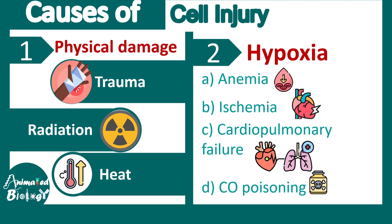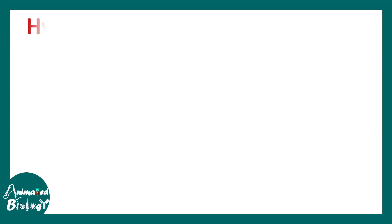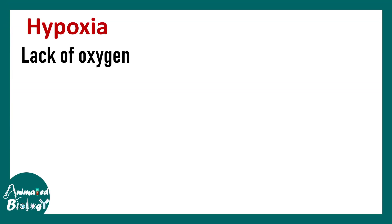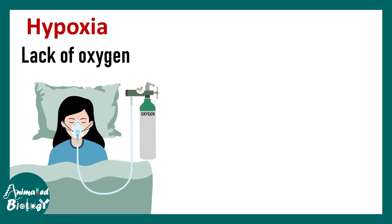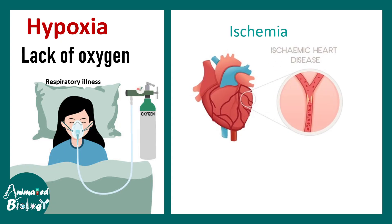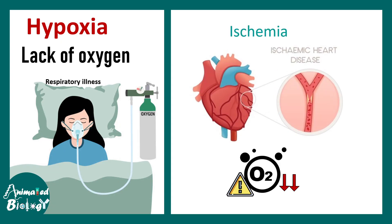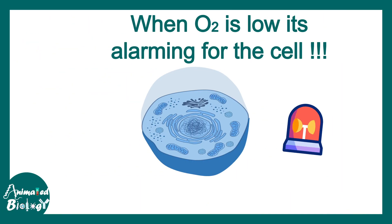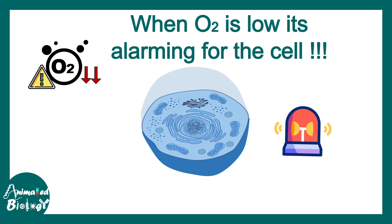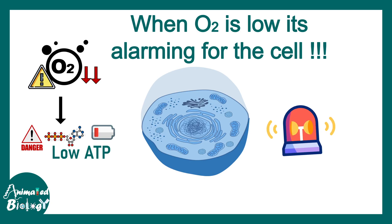Hypoxia simply means lack of oxygen, and this lack of oxygen could be detrimental. It could occur due to respiratory illness or due to ischemia. What happens when oxygen levels fall? It's quite alarming for the cell — when oxygen levels are low, ATP levels also fall lower.